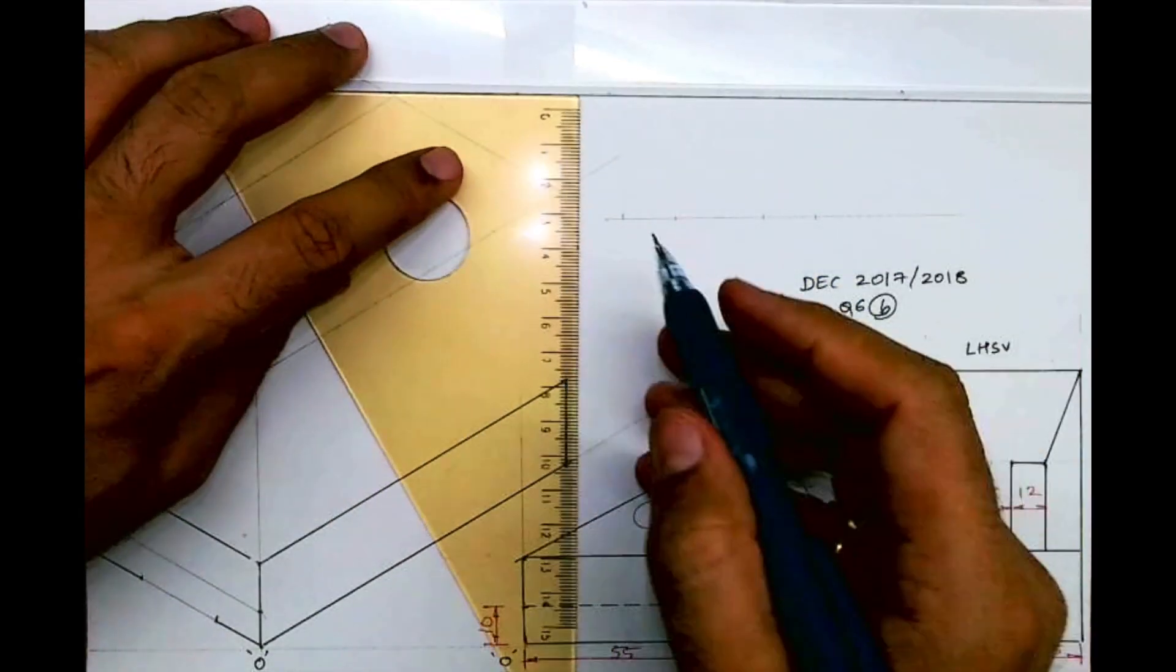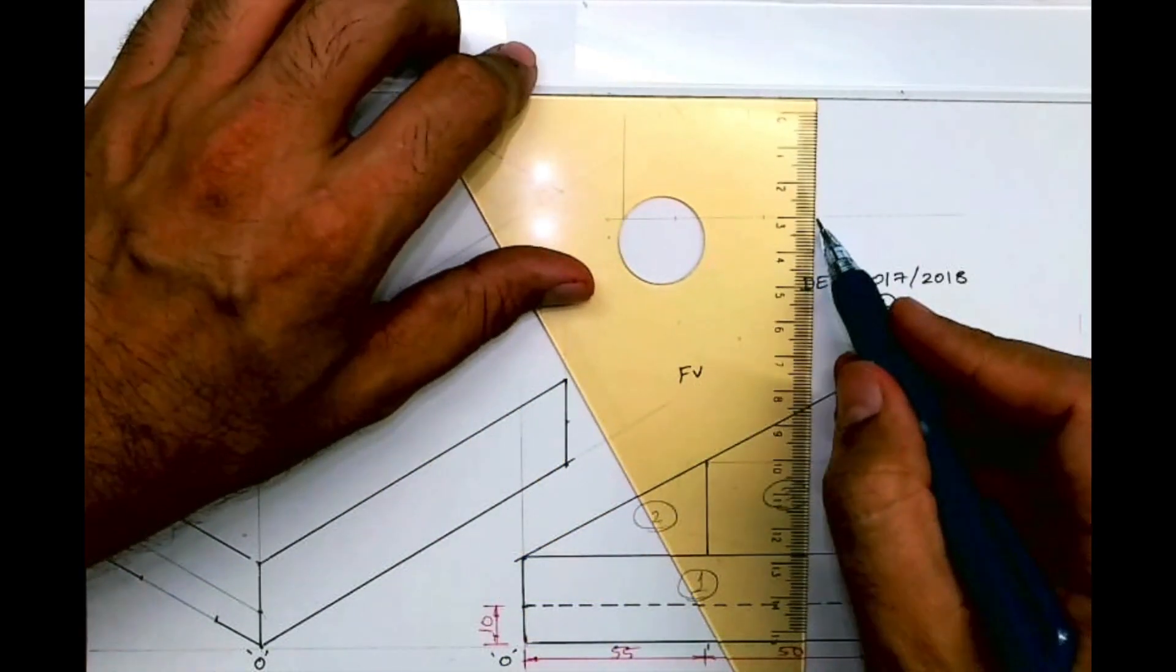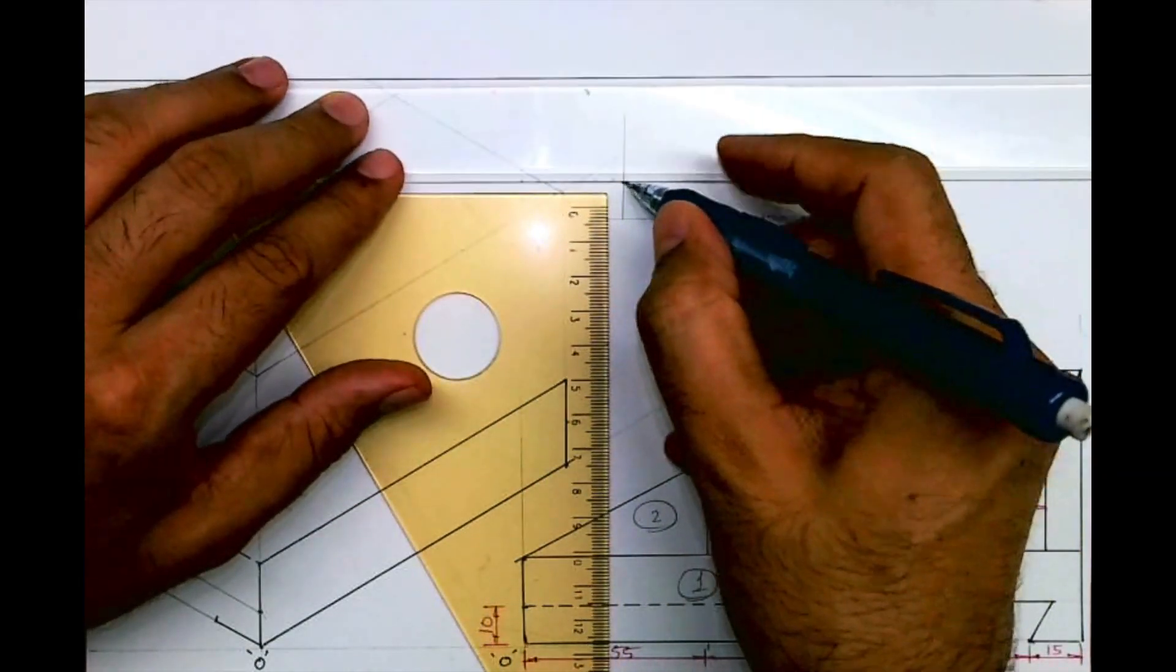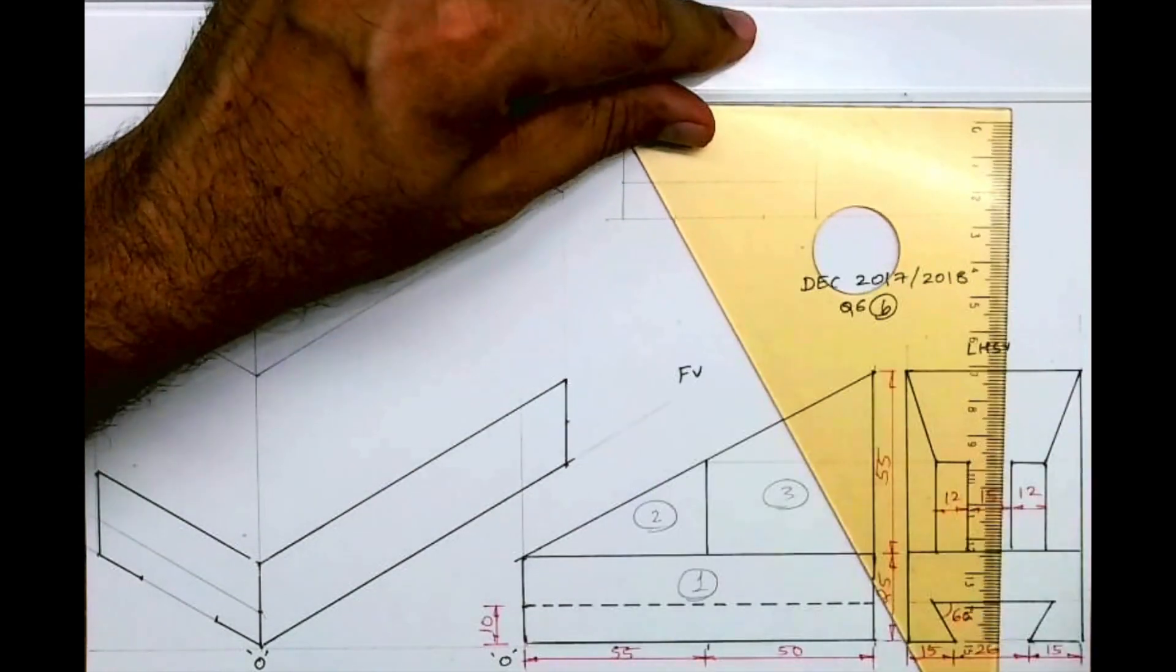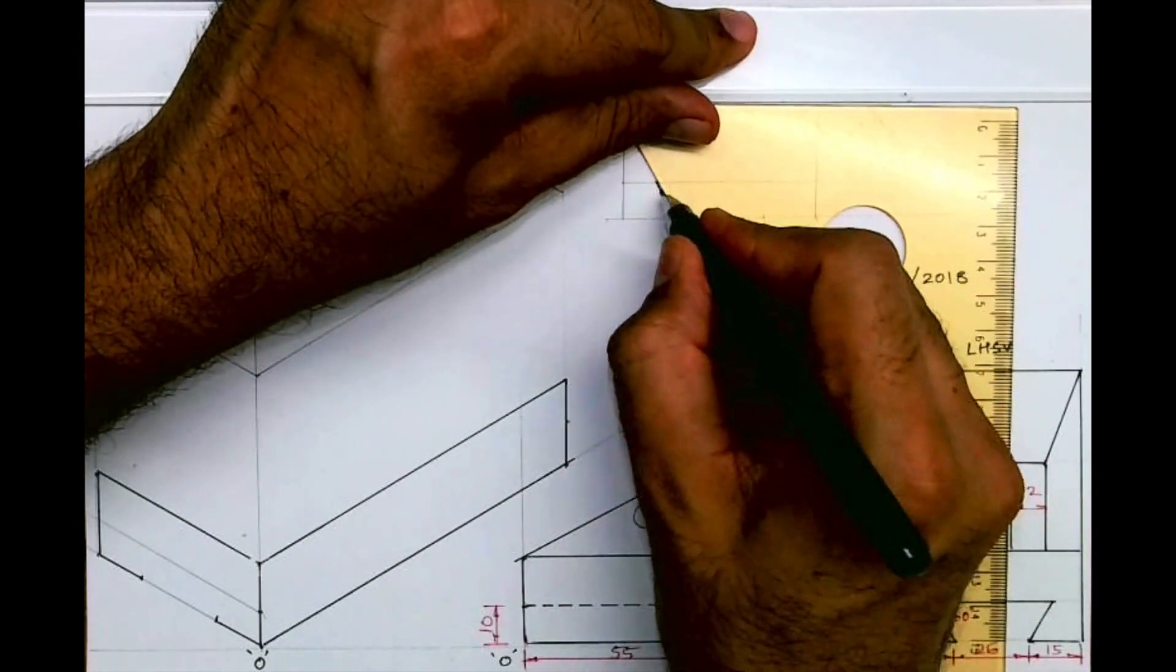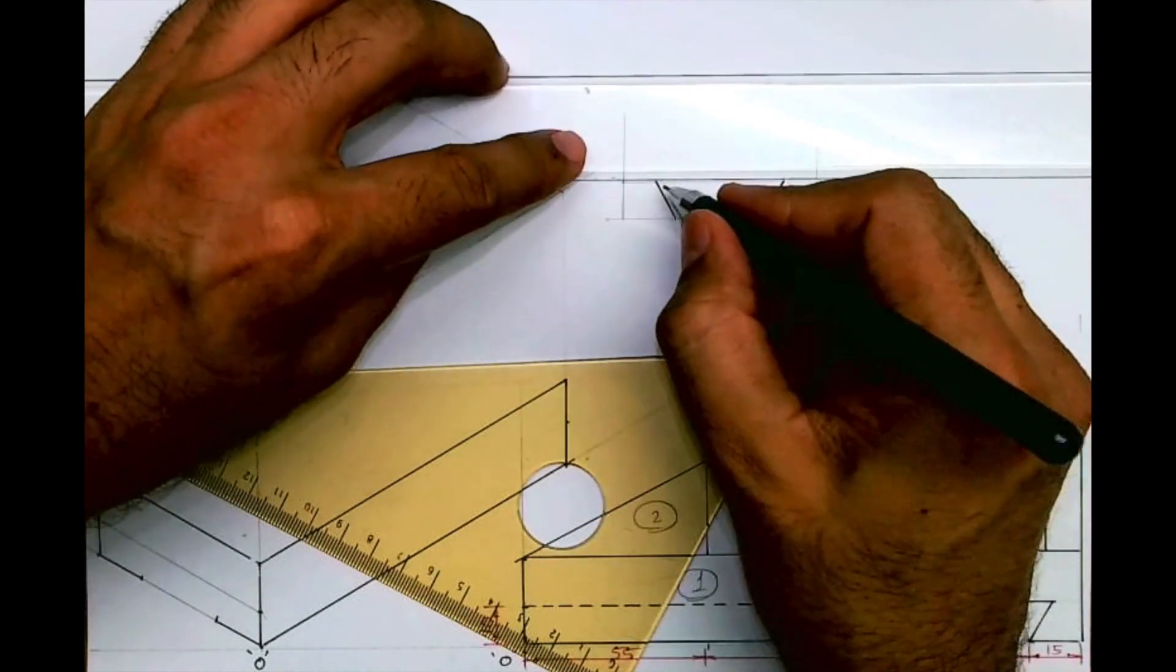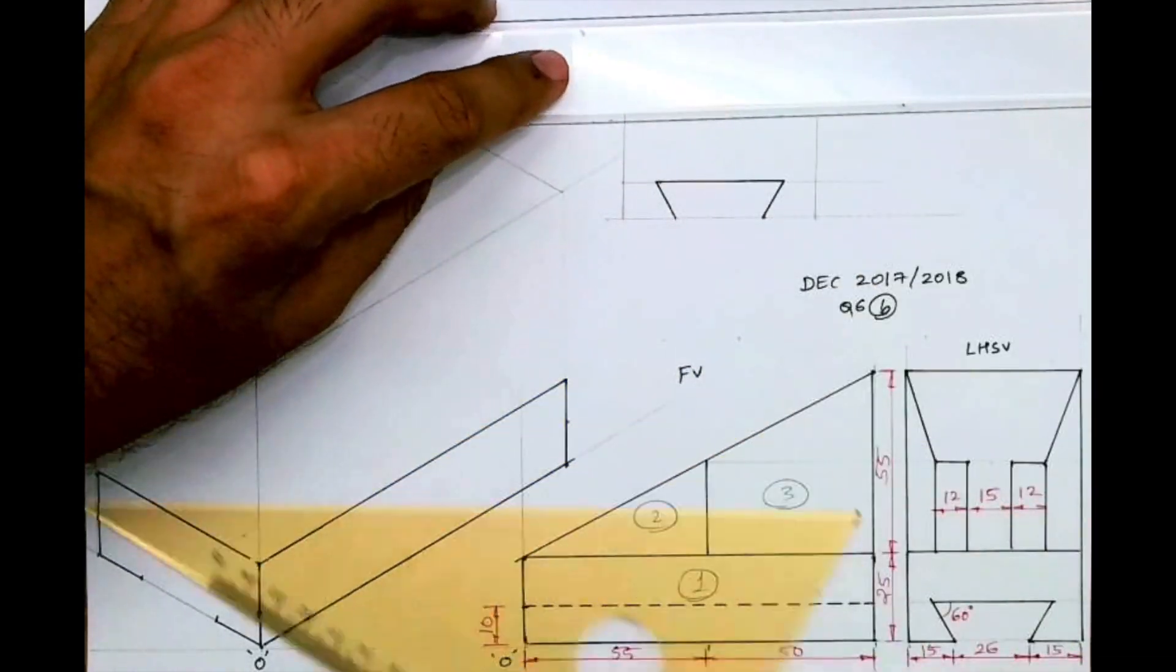Height you take 10 and you take angle 60 degrees. You see, height you take 10 and you take angle 60 degrees. You take 60, 60 on both sides. You take 60, 60 on both sides. This is how you'll get.